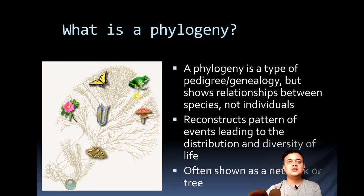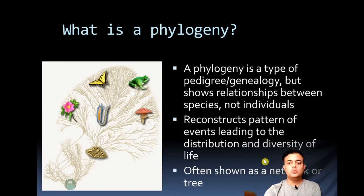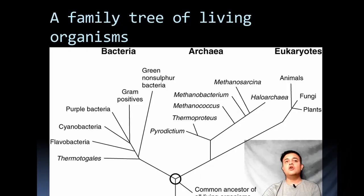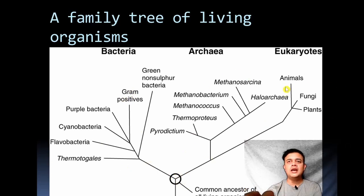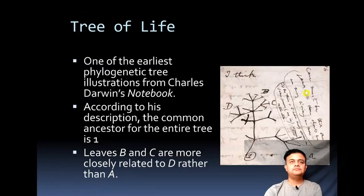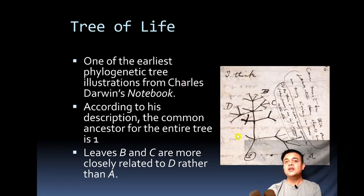Life on the planet — biodiversity — can be arranged in a phylogenetic tree structure: the tree of life. It can also be represented as a reticulate network. The tree of life shows the last universal common ancestor (LUCA), from which bacteria, archaea, and eukaryotes diverged — and among eukaryotes, animals, plants, and fungi. One of the earliest phylogenetic tree illustrations was from Charles Darwin's notebook, which can still be found in the Natural History Museum in London, showing in his own handwriting that B and C are more similar to each other than either is to A.